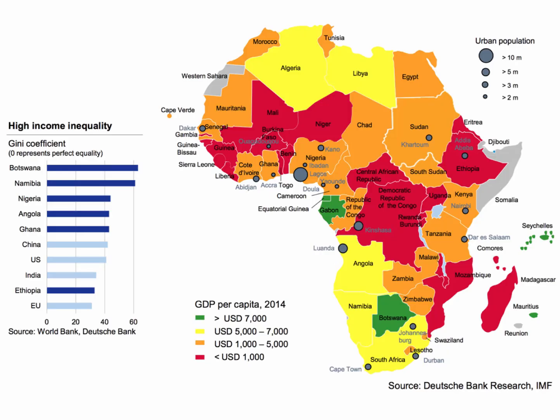This chart is interesting. It shows per capita incomes in 2014, adjusted for PPP, for African countries. You can see countries in green are effectively middle income nations — Gabon, Botswana, Seychelles, Mauritius, Equatorial Guinea. They've reached that level of income.